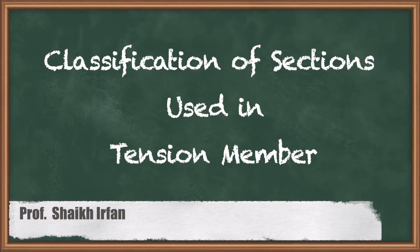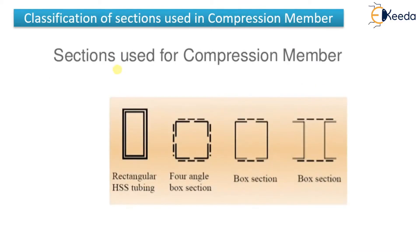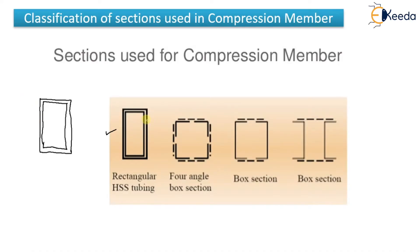In this video we are going to see the different sections used in compression members. The first type is the rectangular tube section — a hollow rectangular section — which is generally used for compression members such as columns.